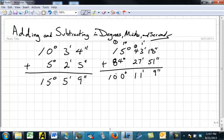Just like when we regroup here by getting a group of 10 and regrouping that to put 1 in the tens place, here when we regroup from seconds to minutes, we have to get 60. And so the answer is 100 degrees, 11 minutes, 9 seconds.